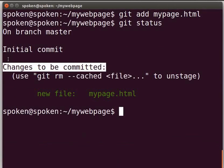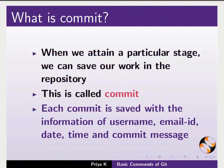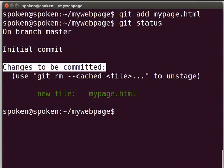Now we will freeze our code at this point. When we reach a particular stage in our work, we can save them in the repository. This is called commit. Each commit is saved with the information of username, email id, date, time, and commit message. Now let us see how to commit. Switch back to the terminal and type git space commit and press enter.